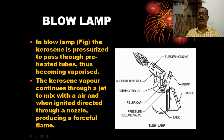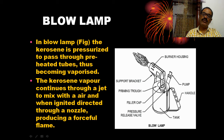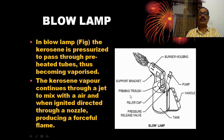This is a brass container. This contains kerosene. The parts include: a tank, a handle, a pump, a burner, a burner housing, a support bracket, a priming trough, a filler cap, and a pressure relief valve. This is a blow lamp.